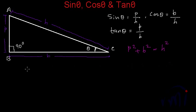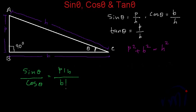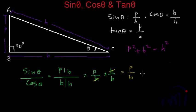If I divide sin theta by cos theta, what do we get? Sin theta is P by H and cos theta is B by H, so this can be written as (P/H) multiplied by (H/B). H and H will cancel each other and we get P by B, which is tan theta. So from here we can say tan theta is also equal to sin theta by cos theta.